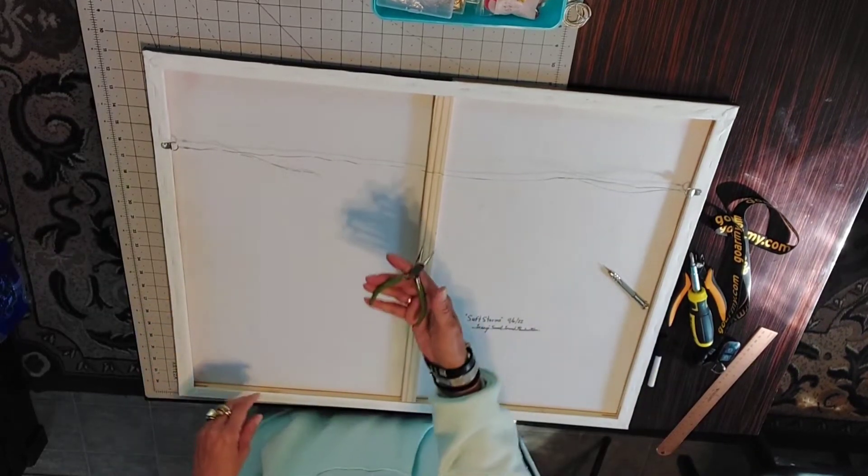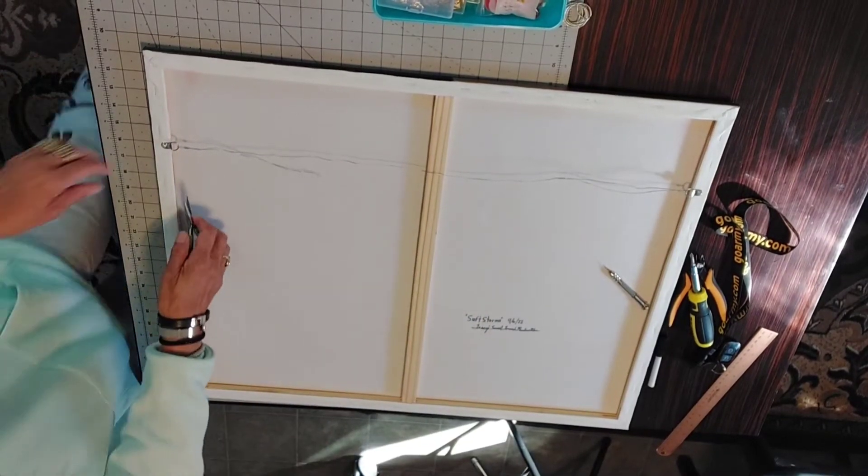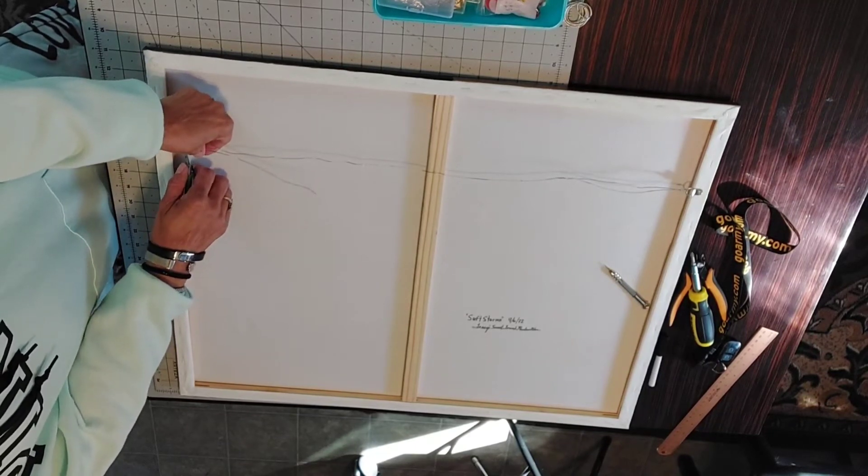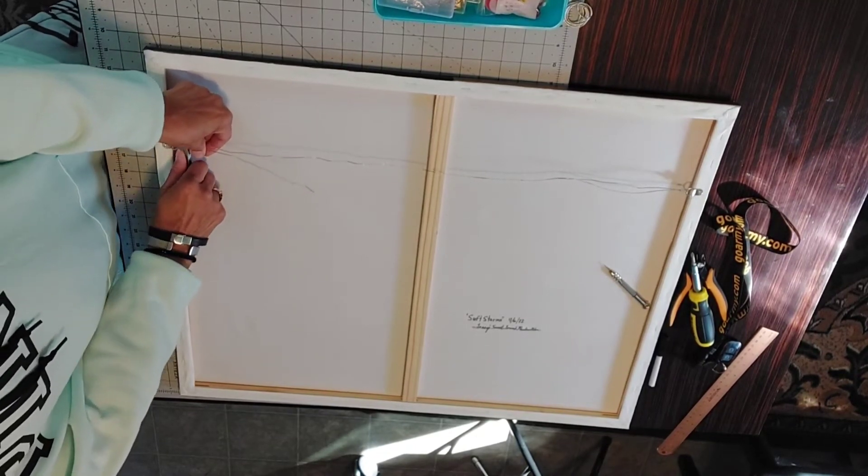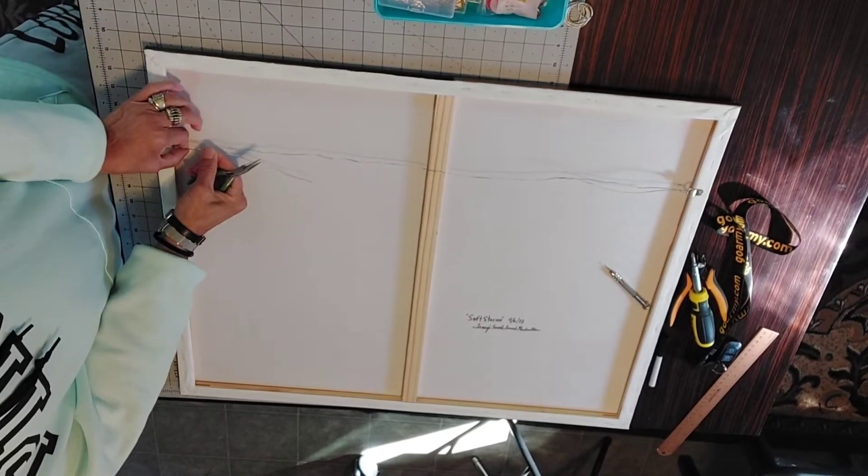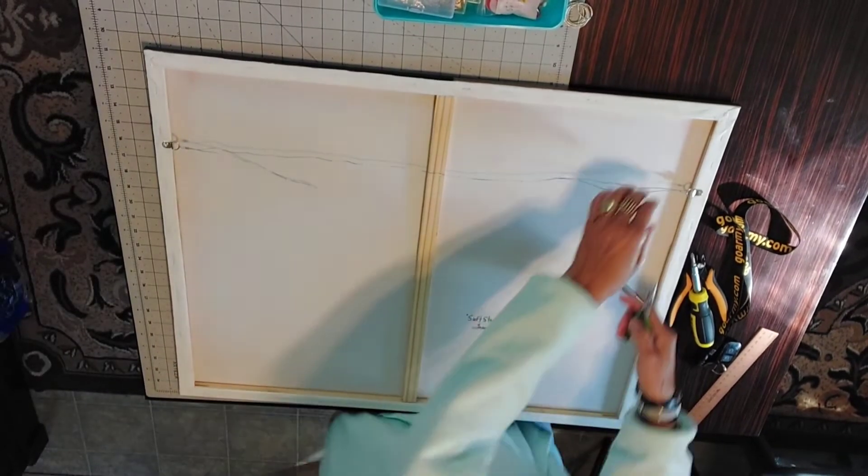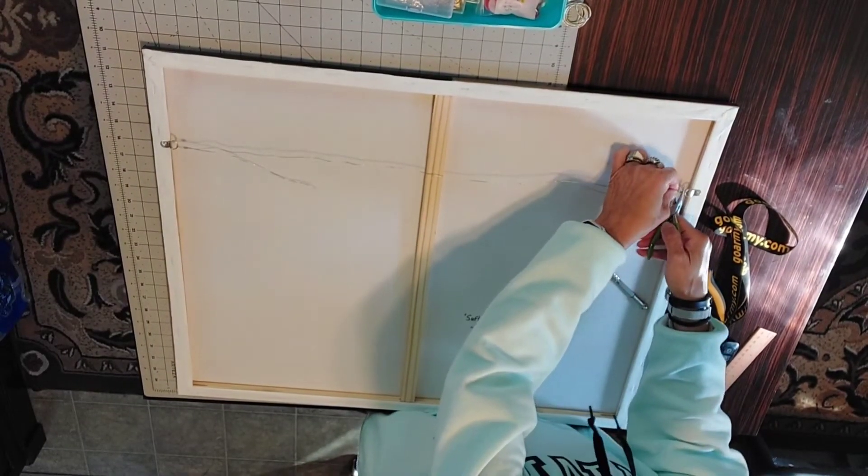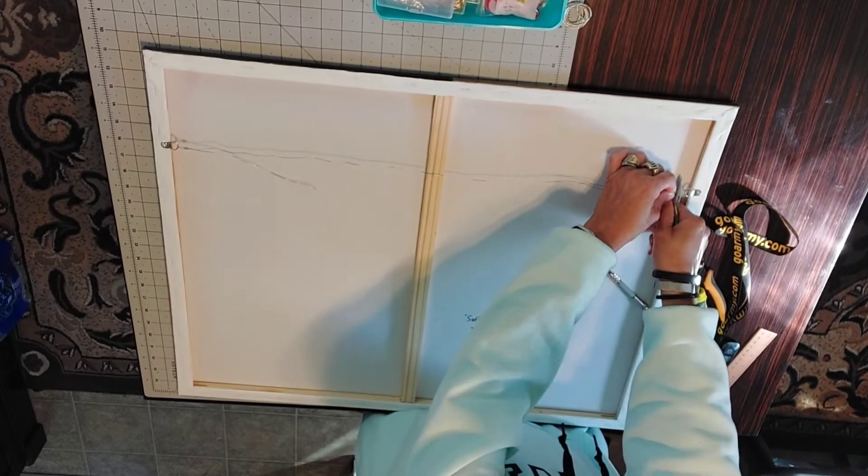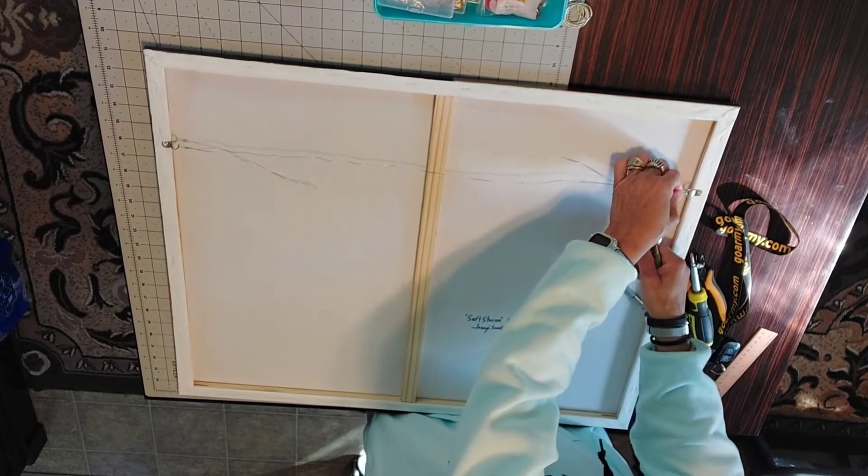Stand back. So, I just have some needle nose pliers. And I'll just take each one of these crimp ends. And squeeze it down. Squeeze on it. And that holds that wire in place. So, it's secure. It doesn't move anymore. Same on the other side. Crimp it down. And it doesn't move.